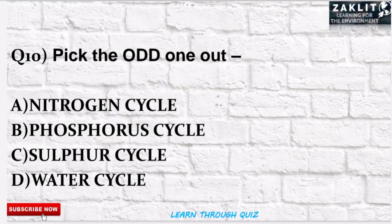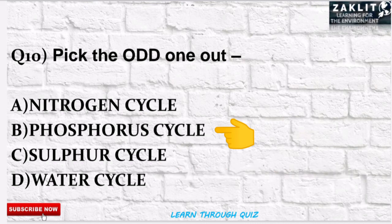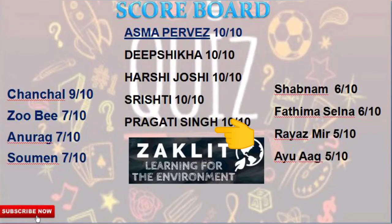The final question was: pick the odd one out. The correct option is B — the phosphorus cycle is the odd one out, because the nitrogen cycle, sulfur cycle, and water cycle all have a gaseous phase, whereas the phosphorus cycle does not have a gaseous phase. Now it's time to reveal the winner.